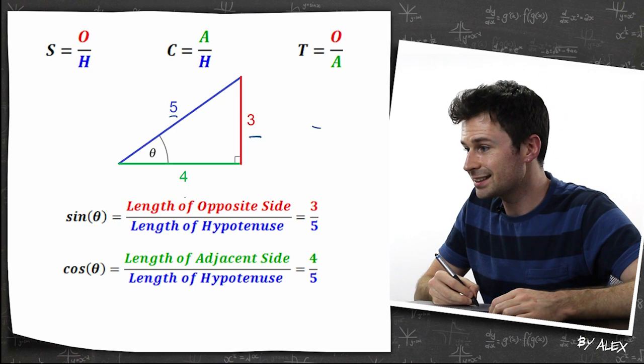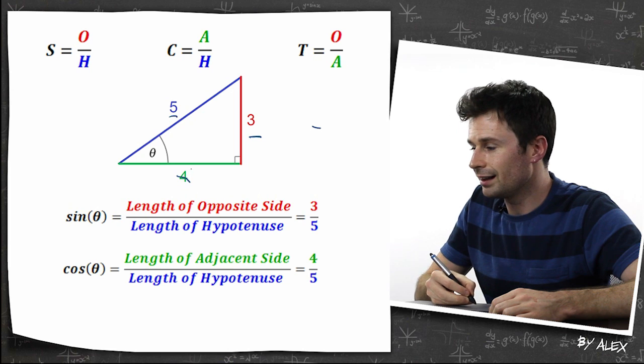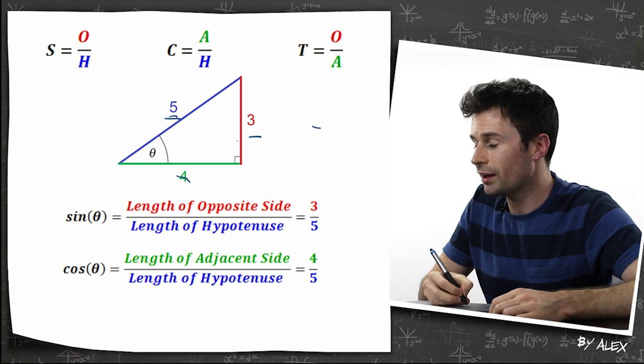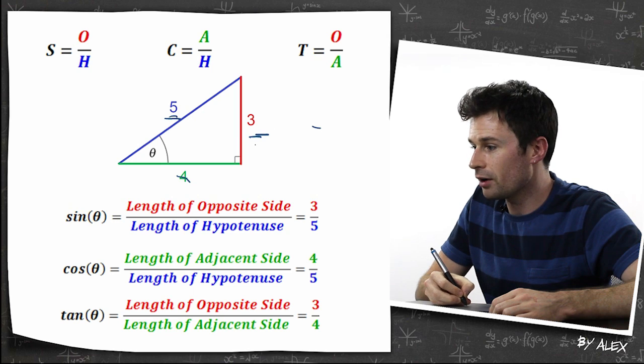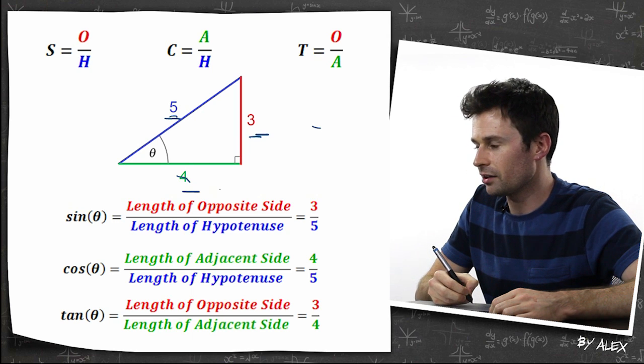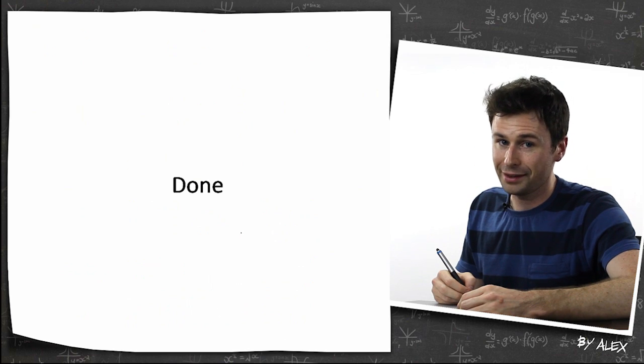Cosine is the length of the adjacent side divided by the length of the hypotenuse. So that's four over five. And tangent is the length of the opposite side divided by the length of the adjacent side. So that's three over four.